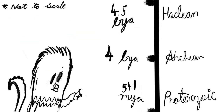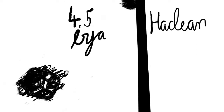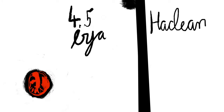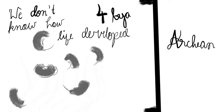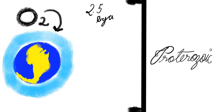The Precambrian is divided into three aeons: the Hadean, during which the Earth formed out of floating matter in space; the Archean, when simple life first appeared; and the Proterozoic, when the atmosphere was filled with oxygen. After the Precambrian era came the Paleozoic.